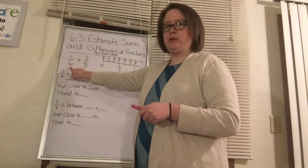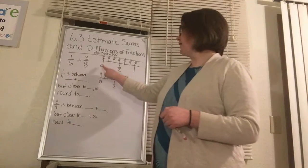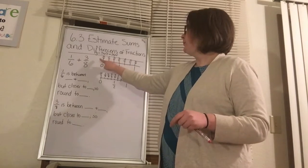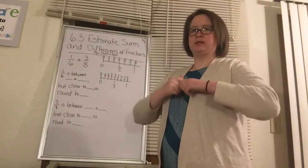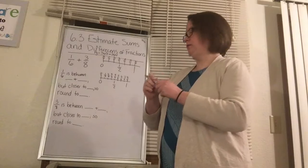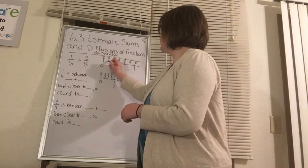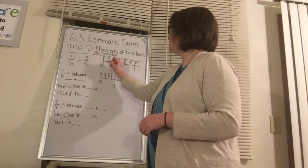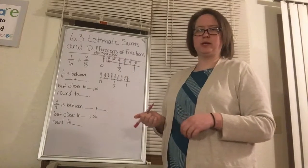So we're going to start with 1/6. I already have a number line made out here, and you have a number line in your book. I'm going to mark where 1/6 is on that number line. It is right there. I'll circle it here so you can see it on the screen.